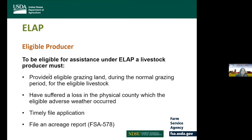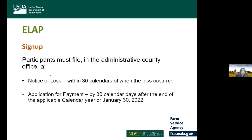To be eligible for ELAP, a livestock producer must provide eligible grazing land during the normal grazing period, have suffered a loss in the physical county where the adverse weather occurred, file a timely application, and report acreage on an FSA-578 crop acreage report. The participant must file a notice of loss within 30 calendar days of when the last loss occurred, along with an application for payment by January 30, 2022.